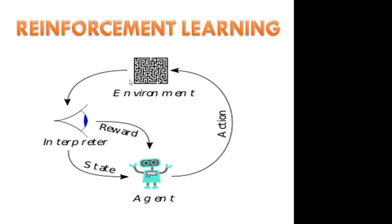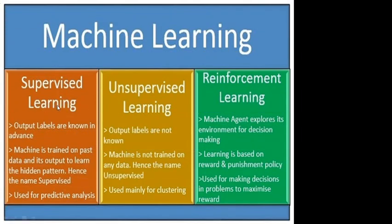Coming to reinforcement learning, one example: for chess, you are learning chess. In the beginning, the chess playing is not good, and you are losing the game. By playing many times — 10 times, 30 times, 100 times — you learn each and every step and finally achieve the target. Machine learning summary: supervised learning, unsupervised learning, reinforcement learning. In supervised learning, output labels are known and there is a training dataset, with predictive analysis. In unsupervised learning, output labels are not known, no training dataset, and clustering analysis is used. In reinforcement learning, decisions are based on reward and punishment policy, and the goal is to maximize the reward — get more rewards, not punishments.